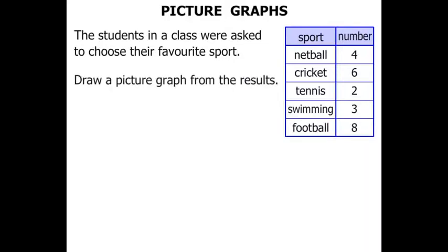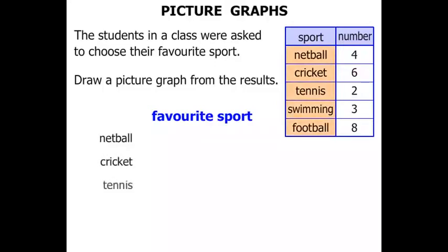Now we need to draw a picture graph from the results. The title of the graph is 'Favorite Sport'. The various sports — let's write them down: netball, cricket, tennis, swimming, and football. And we can draw a line like that.